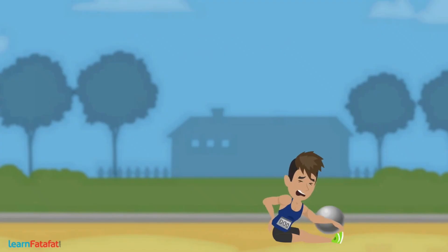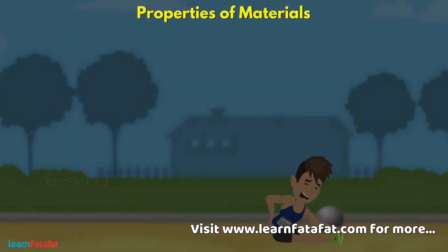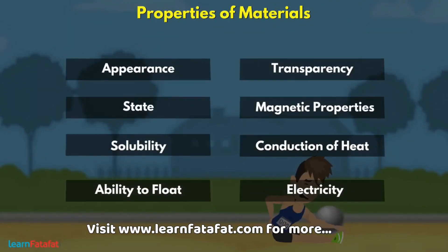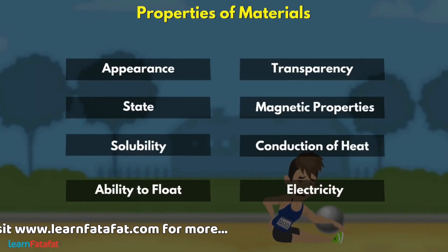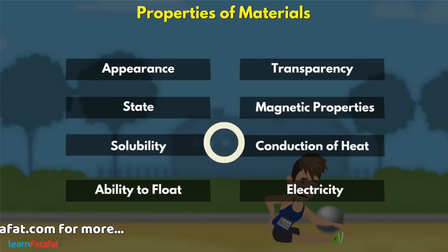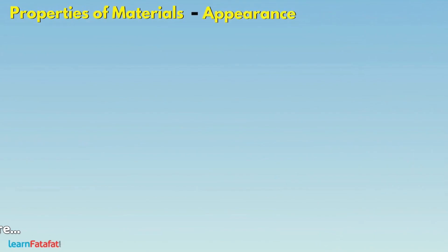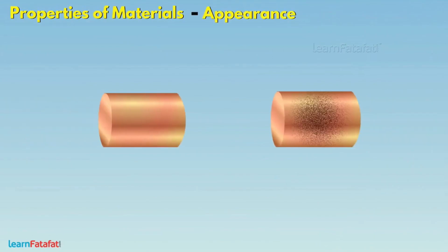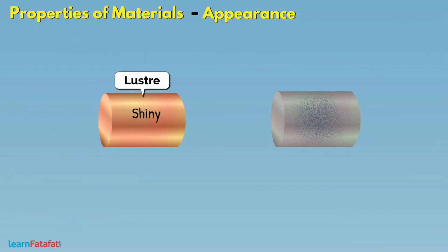In order to make objects for specific needs, we must understand the properties of materials. We will discuss these properties in this video. Appearance gives an idea about the visual look of the material. If a material appears shiny, then we say that it has a property called lustre. Usually, metals have lustre.